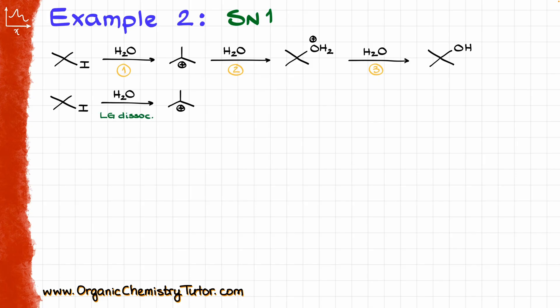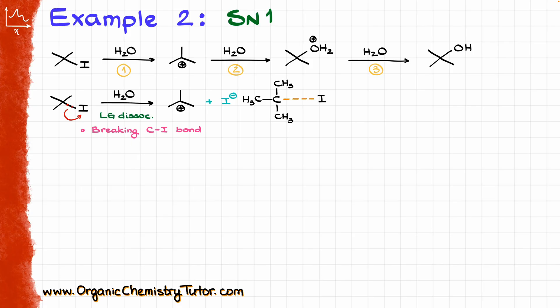My first step is just a simple leaving group dissociation. Mechanistically, we're just taking the electrons on our carbon-iodine bond and kicking those to iodine, giving us our carbocation and an I⁻ as a co-product. The only thing we are doing is breaking this carbon-iodine bond. So when drawing my transition state, I show my carbon skeleton with a long dashed line between carbon and iodine, a delta minus on iodine, and a delta plus on carbon. This is the transition state for this particular step.